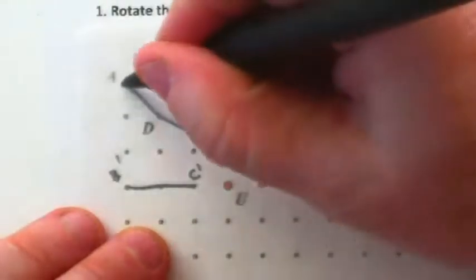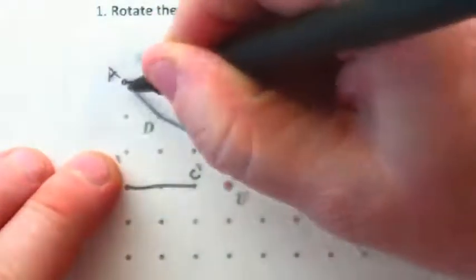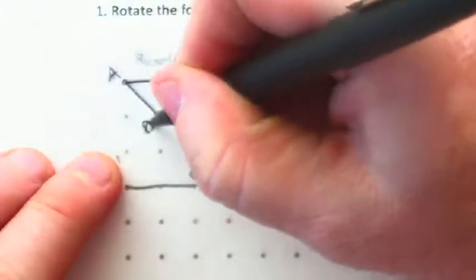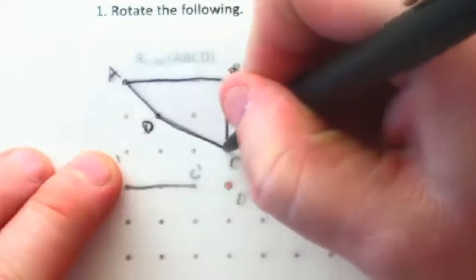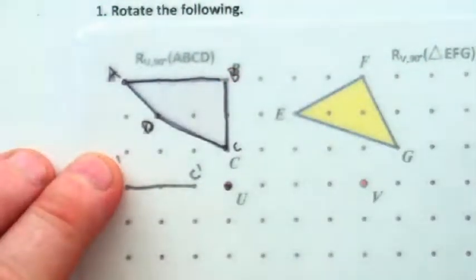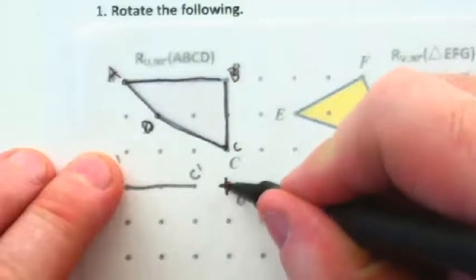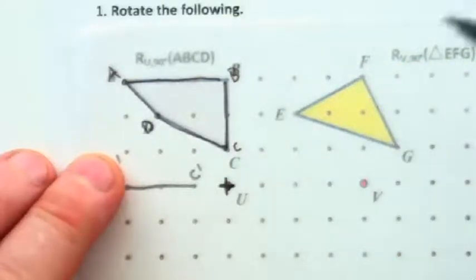What I'm going to do is just quickly jot down our shape and its names, just to keep track of things. And our point U. Now, watch this. Actually, one nice little habit to get in is put a little plus sign here at the point of rotation.